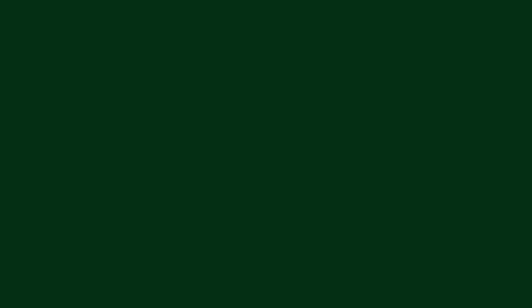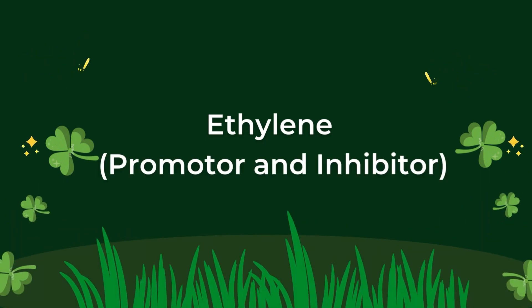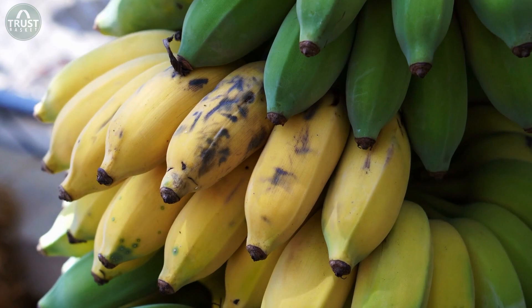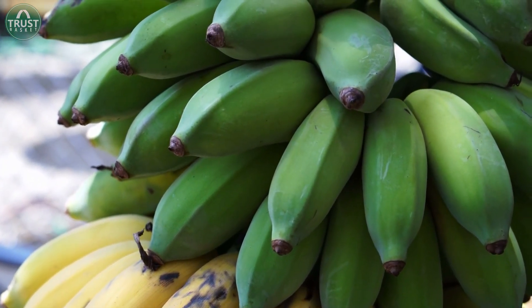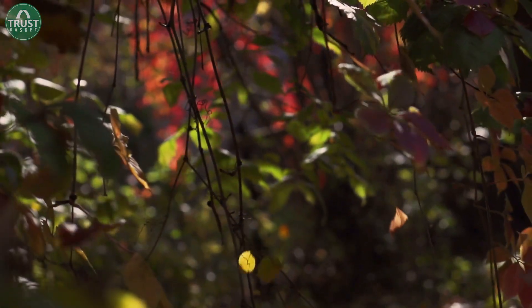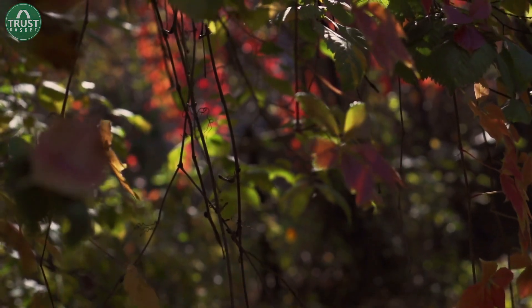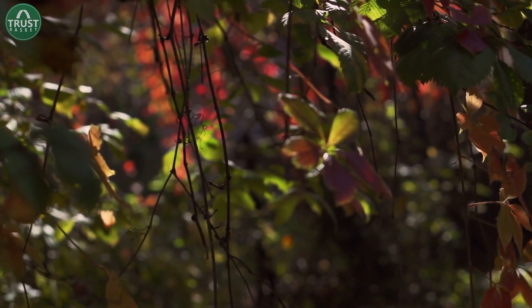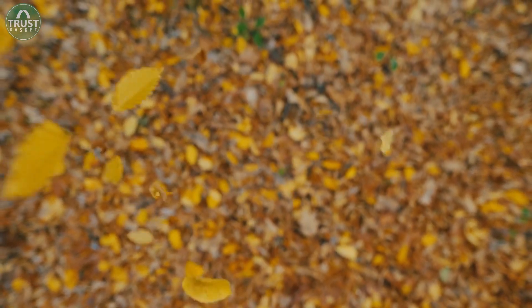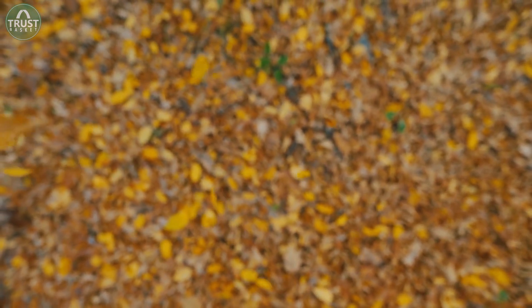Another important role of cytokinins is to counter senescence. To understand ethylene better, you can do a small experiment: keep a ripe banana in a bag with unripe bananas — the unripe bananas will ripen faster compared to normal ripening. This is because of the hormone ethylene. Ethylene is a gaseous hormone produced in ripened fruits, and this hormone helps unripe fruits to ripen faster. Ethylene also promotes senescence and abscission of leaves and plants. Senescence is a natural process of aging in plants, and abscission is the removal of senescent plant parts from the plant body.